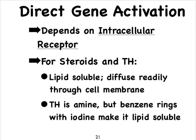Hormones that are lipid-soluble are able to cross the cell membrane and cross the nuclear envelope to reach the DNA, where the hormone can directly impact the activation or inactivation of a particular gene. Lipid-soluble hormones are the steroids, but thyroid hormone also crosses the cell membrane and nuclear envelope — even though it's an amine, it has a chemical modification including benzene rings with iodine, making it lipid-soluble as well. These lipid-soluble hormones find a receptor on the inside of the cell, which we call an intracellular receptor.